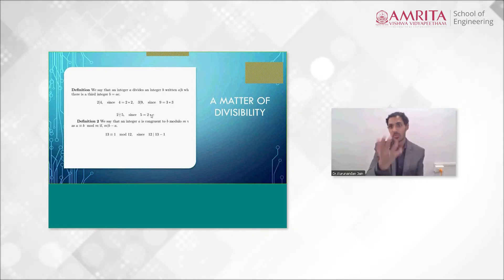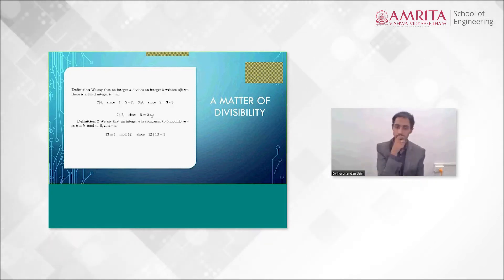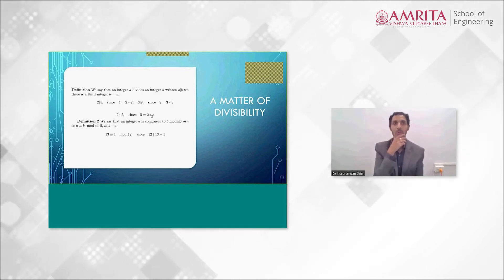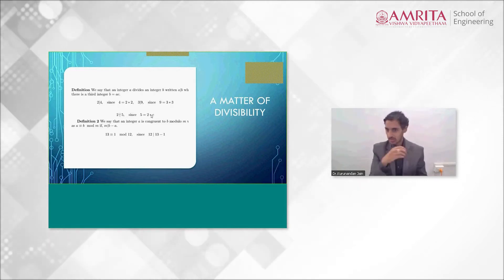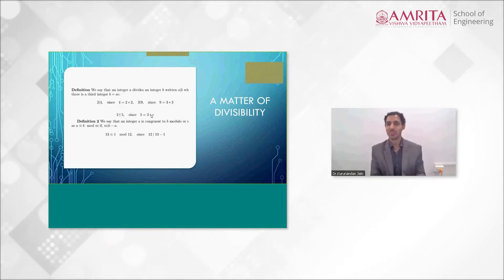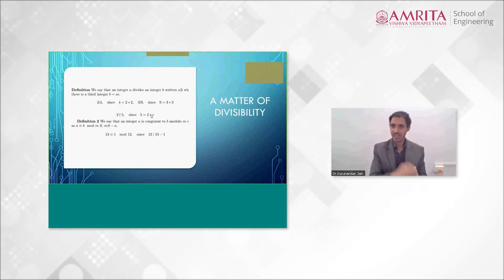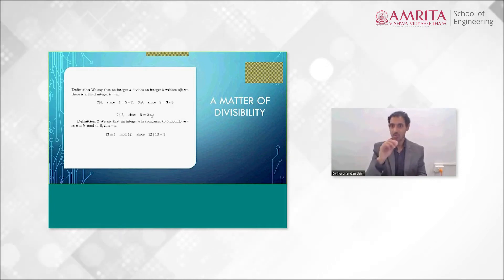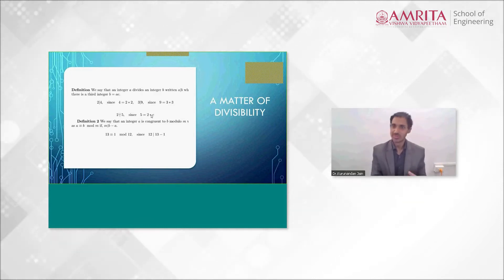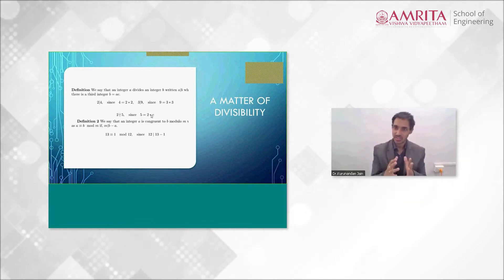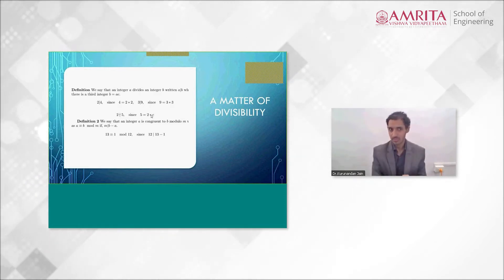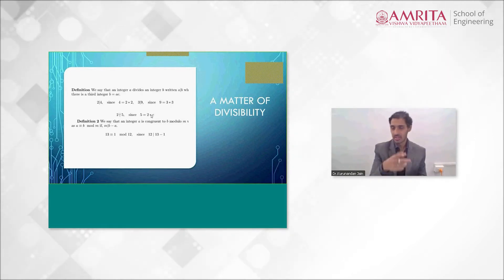The next definition is something called congruence modulo. This one is a little more difficult to understand, but I guarantee you every day in real life we're using this concept — without fail, every day. You are seeing modulo arithmetic and you don't even know about it. Modulo arithmetic is just division with the remainder. We say that a is congruent to b modulo m if m divides b minus a. For example, 13 is congruent to 1 modulo 12 because 13 minus 1 is 12, and 12 divides 12.